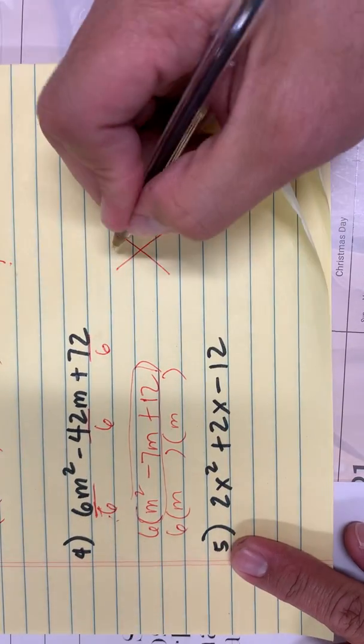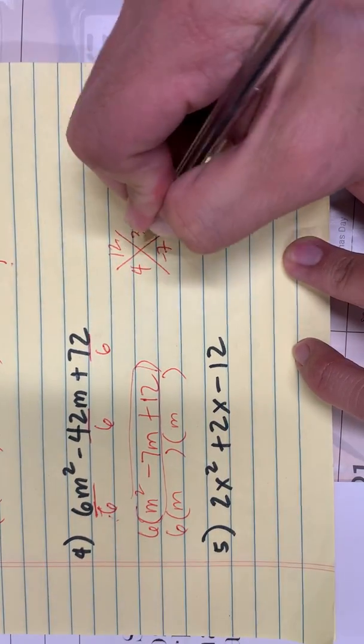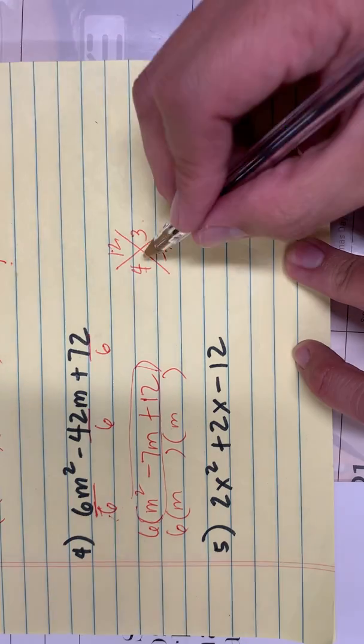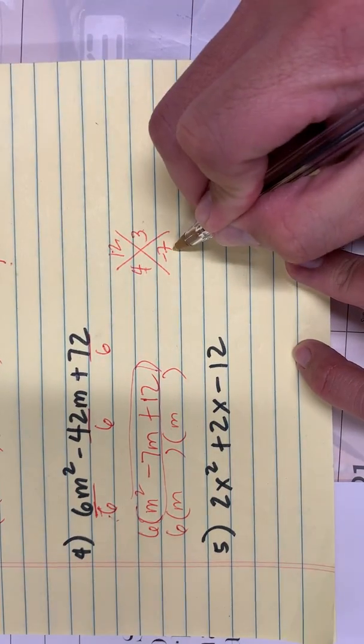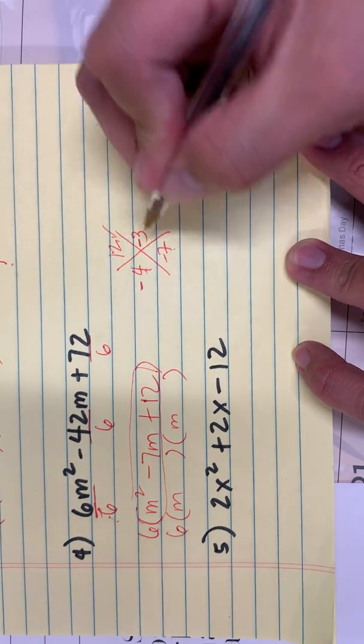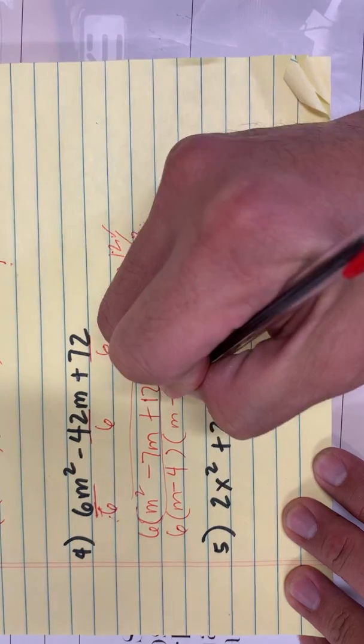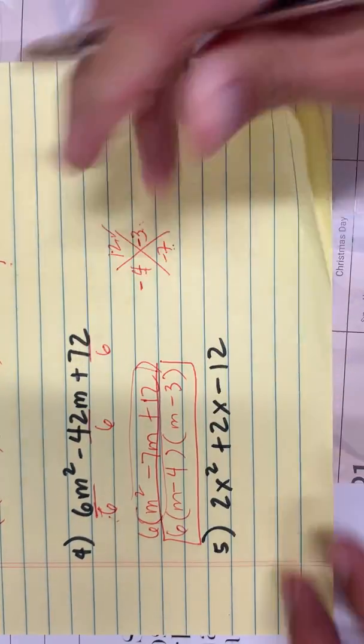What two numbers when you multiply them gives you 12, when you add them gives you negative 7? 4 and 3 is right, 4 times 3 is 12. But 4 plus 3 is not negative 7. But negative 4 times negative 3 is positive 12, and when you subtract them it's going to be negative 7. So minus 4 minus 3.